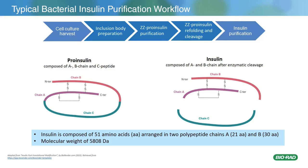Insulin is then purified via intermediate chromatography. As you can see in the middle of the screen, insulin is composed of the A and B chain after enzymatic cleavage. Insulin is 51 amino acids — the A chain is 21 amino acids long, the B chain is 30 amino acids, and the molecular weight is around 5,800 daltons.